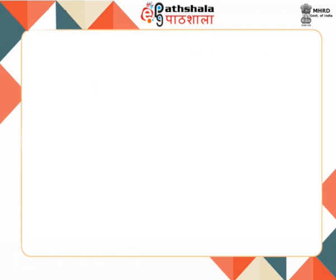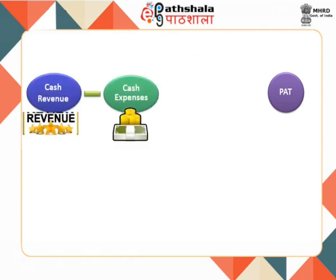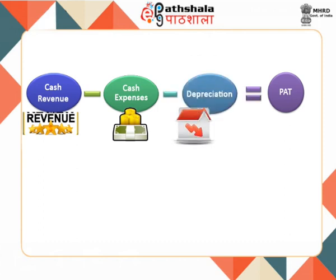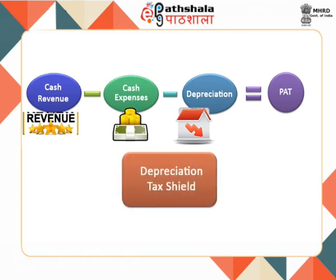Cash flows rather than accounting profit are used for the investment decision process. We arrive at PAT by deducting all cash expenses from cash revenue and further taking into account the impact of depreciation by subtracting it. The presence of depreciation reduces the tax liability of the company. This reduction in tax liability is known as the depreciation tax shield, which is equal to the amount of depreciation (DEP) multiplied by the tax rate. This amount is added back to the amount of PAT to arrive at NCF.